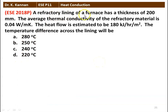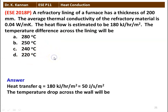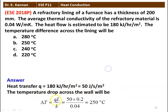Next question: a refractory lining of a furnace has a thickness of 200 millimeter. The average thermal conductivity of the refractory material is 0.04 watts per meter Kelvin. The heat flow is estimated to be 180 kilojoules per hour per meter square. The temperature difference across the lining will be: (A) 280°C, (B) 250°C, (C) 240°C, (D) 220°C. Converting 180 kJ/hr/m² to SI units gives 50 joules per second per meter square. Then ΔT = Q·L / K = 50 × 0.2 / 0.04 = 250 degree Celsius. The answer is option B, 250 degree Celsius.